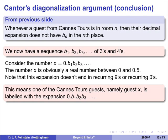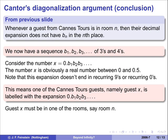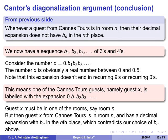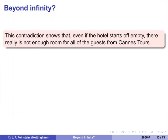Guest x is labelled the expansion 0.b1b2b3. But they must be in one of the rooms — I assumed that. Say they're in room n. Now this Cantor's guest, guest x, is in room n, and they've got a decimal expansion with bn in the nth place. Which contradicts the boxed statement at the top: because if there's a guest from Cantor's in room n, then their decimal expansion doesn't have a bn in the nth place. That's a contradiction. I've deduced something ridiculous by logical steps from my original assumption, which means my original assumption must have been wrong. The original assumption was that there was a way to fit them all in, so the conclusion is that there isn't a way to fit them all in.